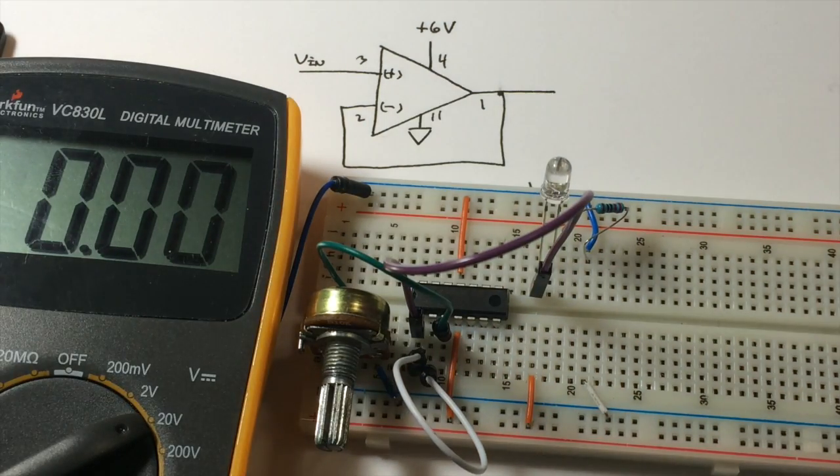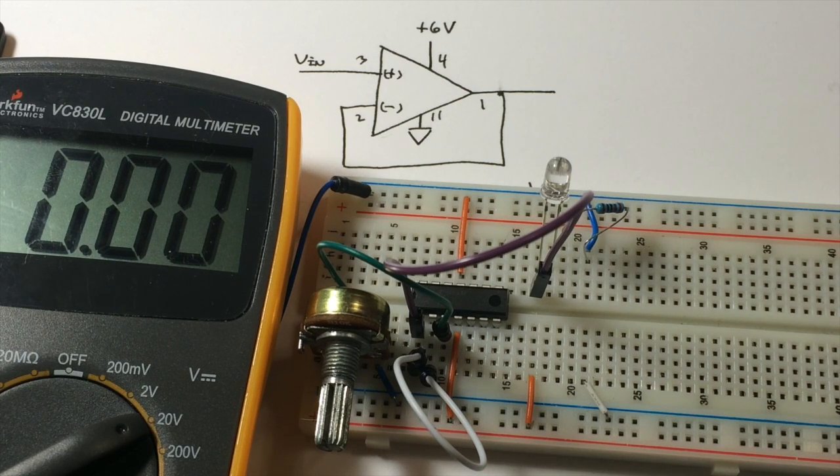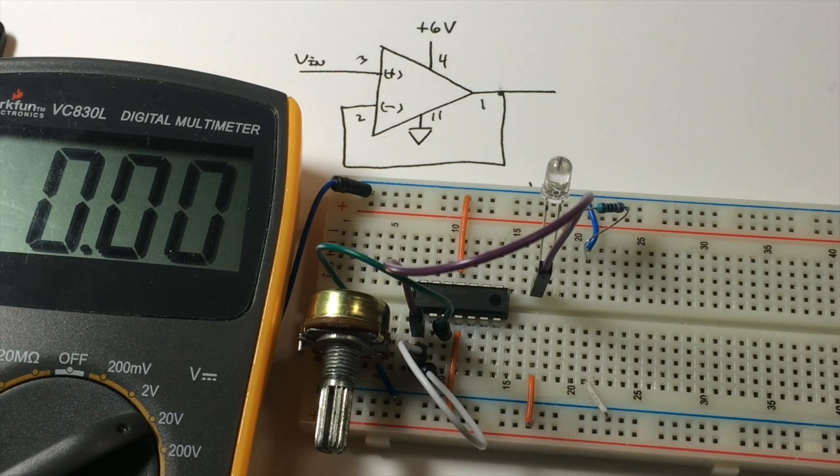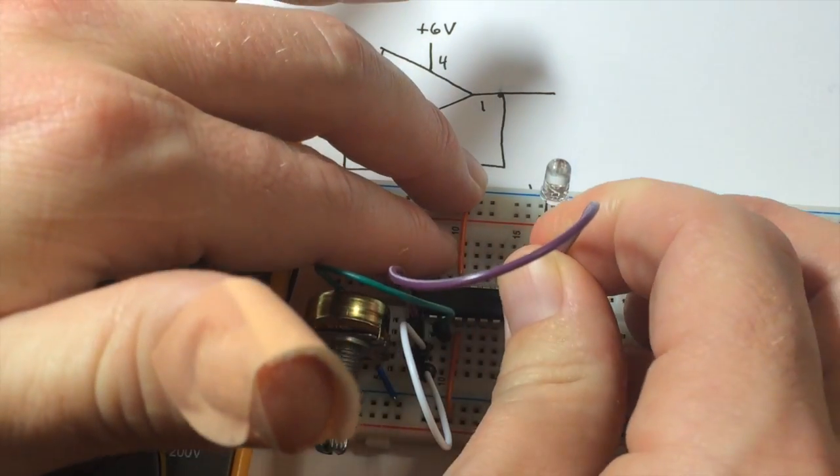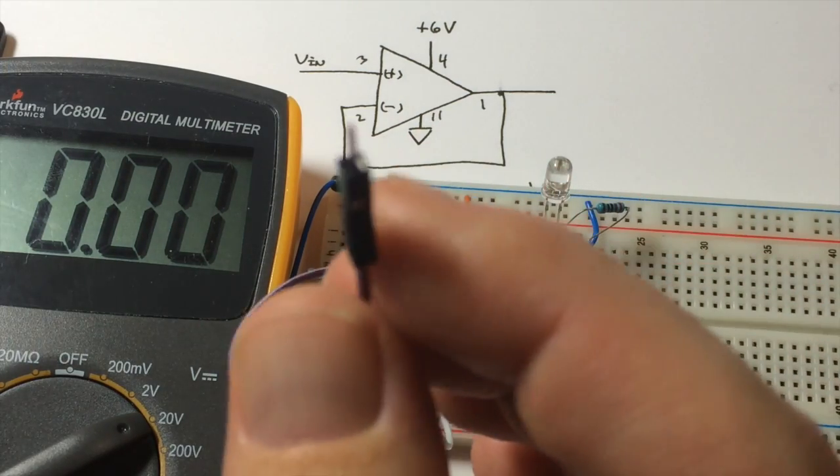I'm going to give you just a second to kind of look at that and see how that works. Okay, now the LED is not lit up, not surprising because we only had 1.31 volts in there. So what did we say earlier? We said that the input voltage should be the same as the output voltage.